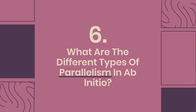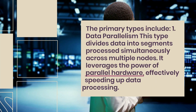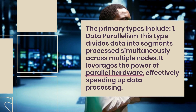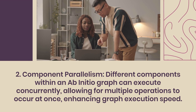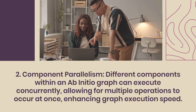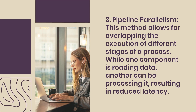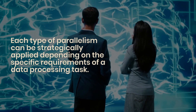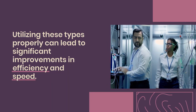Question 6: What are the different types of parallelism in AbInitio? AbInitio supports several types of parallelism. 1) Data parallelism — divides data into segments processed simultaneously across multiple nodes, leveraging parallel hardware to speed up processing. 2) Component parallelism — different components within a graph execute concurrently, allowing multiple operations at once, enhancing execution speed. 3) Pipeline parallelism — allows overlapping execution of different stages; while one component is reading data, another can be processing it, reducing latency. Each type can be strategically applied depending on the specific requirements of a data processing task.